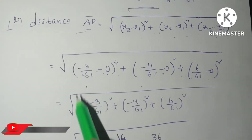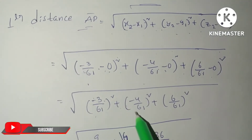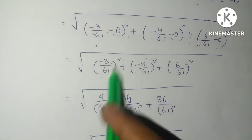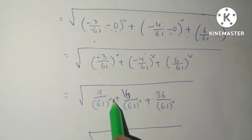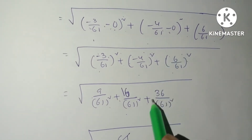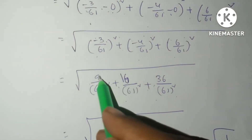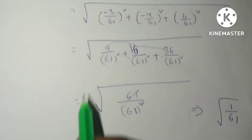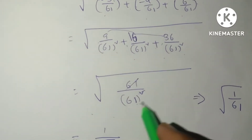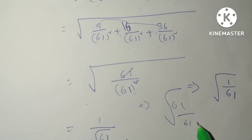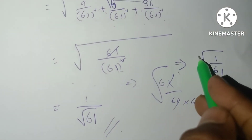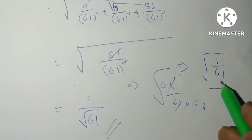So the distance = √[(-3/61)² + (-4/61)² + (6/61)²] = √[(9 + 16 + 36) / 61²] = √[61 / 61²] = √[1/61] = 1/√61. Therefore the perpendicular distance is 1/√61.